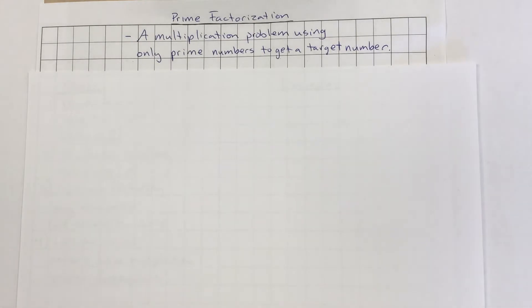It's really a multiplication problem using only prime numbers to get a target number. So if you have a number you're trying to get to, what are the prime numbers that you could use to multiply to get to that? And so I'm going to give you a couple quick steps that we can kind of use for this.